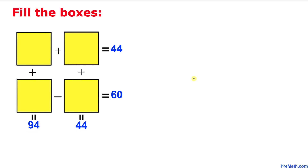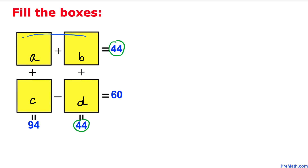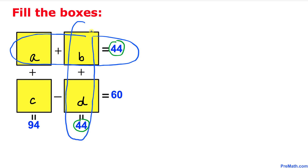Let's get started with the solution. The first thing we are going to do is label these boxes — I'm going to call this box A, this box B, this box C, and this box D. Now we can see that these numbers 44 and 44 are the same, and here's our strategy: let's focus on the boxes that add up to 44 in both cases.